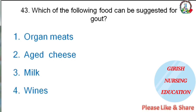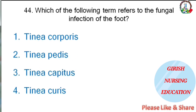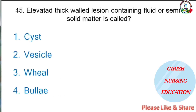Which food can be suggested for gout — organ meats, aged cheese, milk, or wines? The correct answer is milk. Which term refers to fungal infection of the foot — tinea corporis, tinea pedis, tinea capitis, or tinea cruris? The correct answer is tinea pedis.